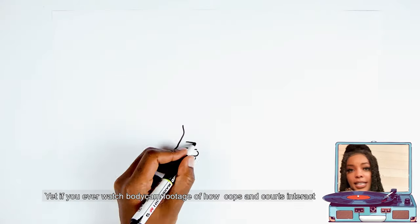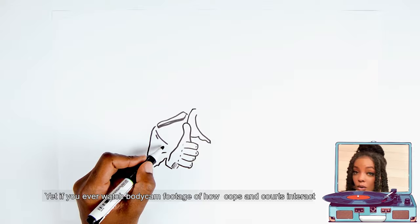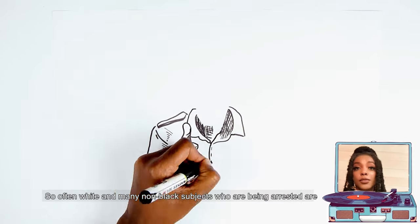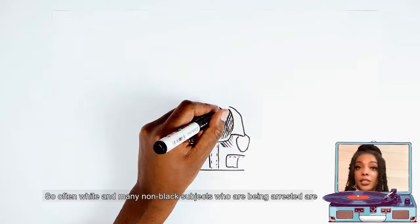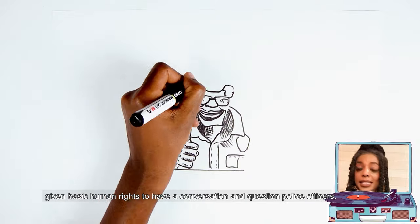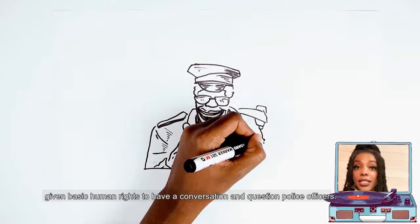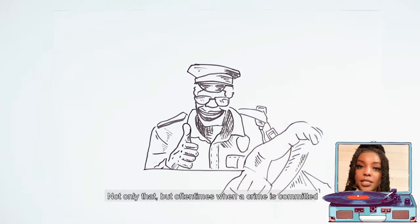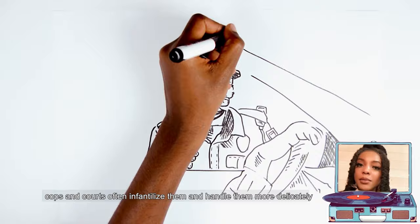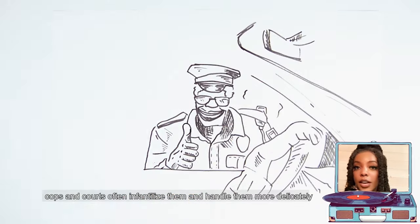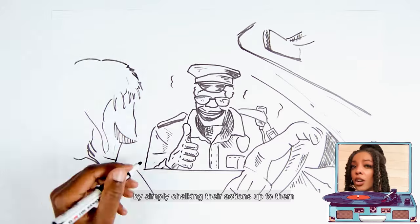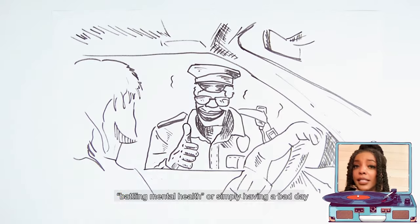Yet if you ever watch body cam footage of how cops and courts interact with white subjects, leniency is granted. So often white and many non-black subjects who are being arrested are given basic human rights to have a conversation and question police officers. Not only that but oftentimes when a crime is committed by a non-black person, cops and court systems will oftentimes try to infantilize them and handle them more delicately by simply chalking their actions up to them battling mental health, or simply having a bad day.